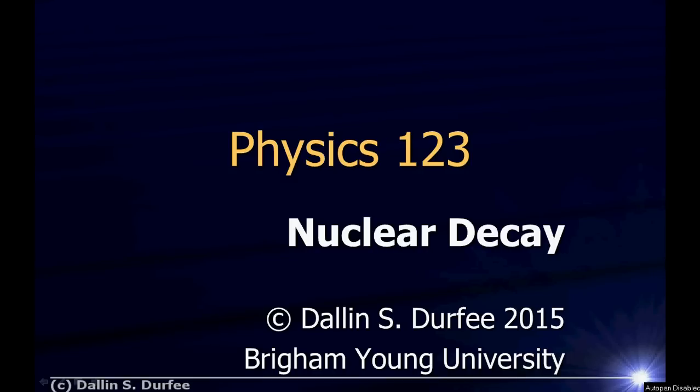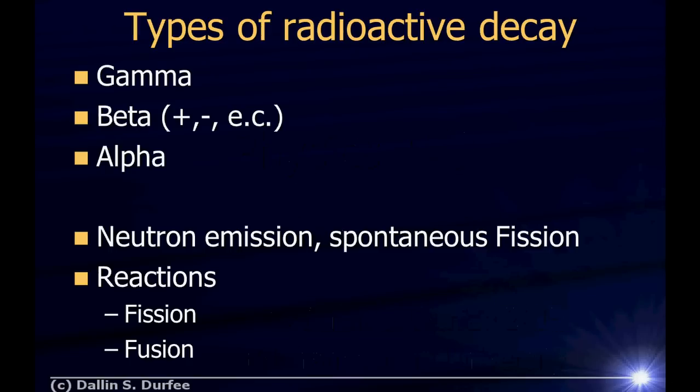Nuclear decay. It turns out there are several types of radioactive decay. The most common are gamma, beta, and alpha, and we're going to talk about those.